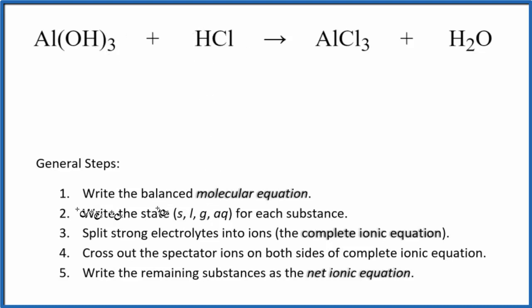So first, when we do net ionic equations, we need to balance the molecular equation. So this is our molecular equation. Three chlorines here, let's just put a three here. Now I have three times one, three hydrogens plus three, that's six hydrogen atoms. So I'll put a three here, two times three is six. So now the hydrogen atoms, they're balanced. Three oxygens and then three times one, three oxygens, the aluminums. So this is the balanced molecular equation.